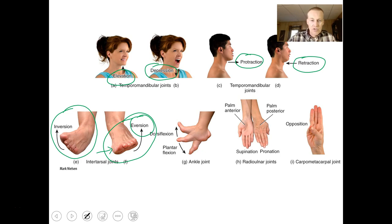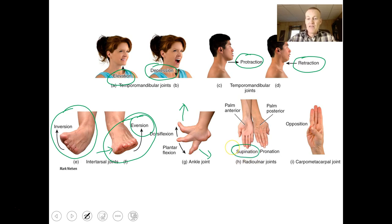Bringing our toes up is called dorsiflexion; bringing them down or standing on our toes is called plantarflexion. With our palm, rotating it so you can see the palm is called supination — think of making a cup out of your hand, like a bowl of soup. Pronation is rolling it the other way, palm down, so you see the posterior surface.